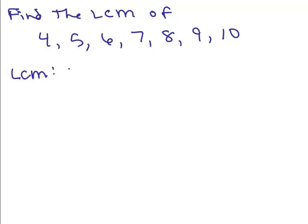Starting off with 4, I need a 2 times a 2. I'm just going to factor in my head this time. For 5, the prime factorization of 5 is just 5 — I make sure I get a 5 in there. For 6, you need a 2 times 3. I have one 2 already in there, so I'm going to build it up by putting in a 3. 7 is prime, so I need to just put that in — there isn't a 7 yet. For 8, that's 2 times 2 times 2, so I need 3 factors of 2. I need to get one more 2 in there.